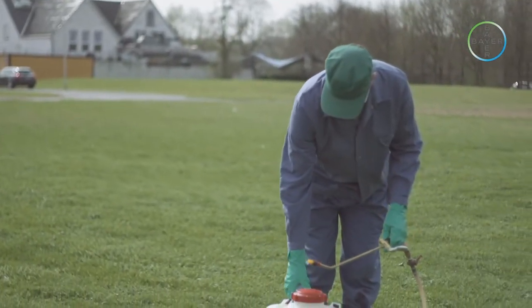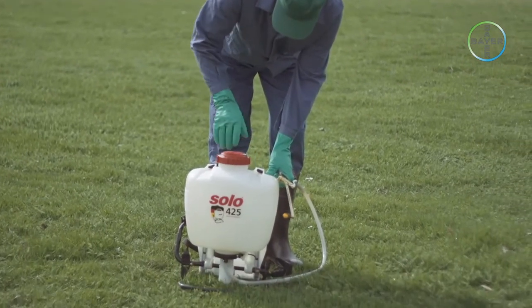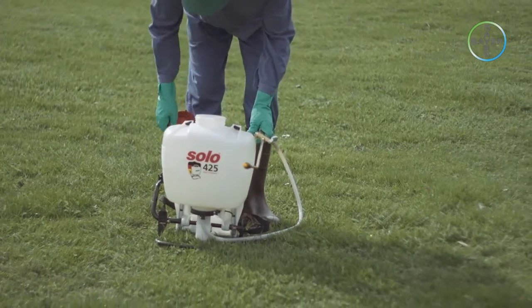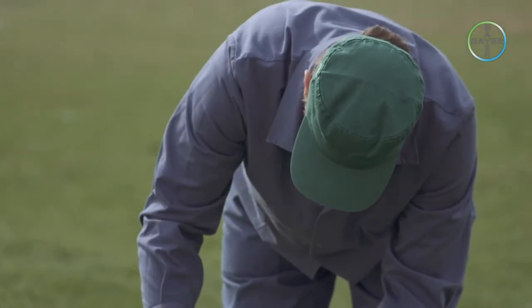The calibration of hand-operated sprayers is usually operator-specific because different individuals will, for example, walk at slightly different speeds. The first task is to check over the sprayer. Make sure it is clean and in good working order with no leaks.